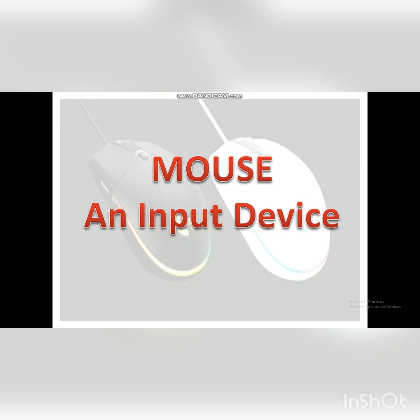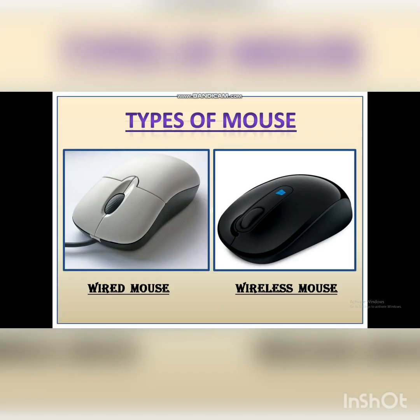Today we will be learning about the types of mouse. There are 4 types of mouse which we will be seeing. So let's continue Mouse and Input Device — Types of Mouse. Children, we will learn today there are 4 types of mouse.